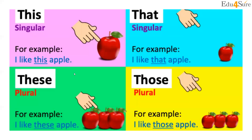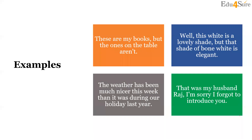I like this apple — the apple is near. I like that apple — the apple is far from us. I like these apples — plural, near. I like those apples — plural, far. For example: These are my books, but the ones on the table aren't my books.